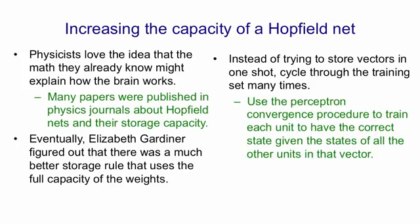Notice those will be integer changes to the weights. You may have to do this several times, and of course if you give it too many memories this won't converge. You only get convergence with the perceptron convergence procedure if there is a set of weights that will solve the problem. But assuming there is, this is a much more efficient way to store memories in a Hopfield net.